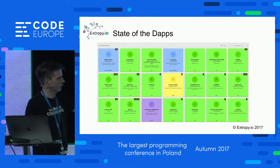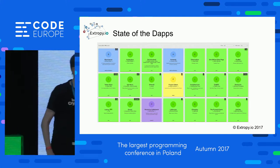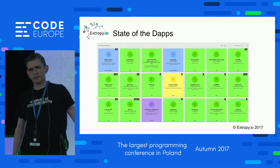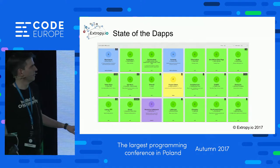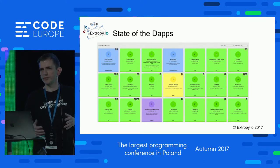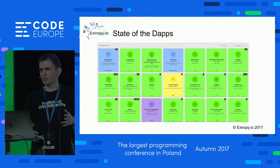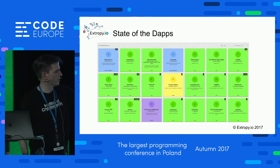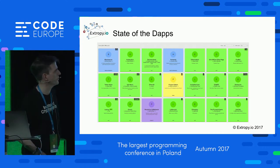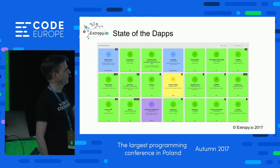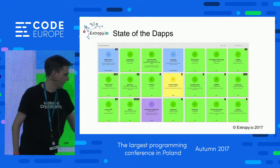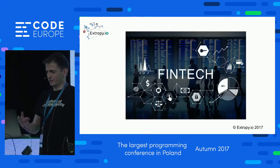Ujo Music, by a company called ConsenSys who do a lot of development on Ethereum, allows people who write music and want their royalties paid to get them instantaneously rather than having to wait. Decentraland is a game application. There are lots of different things.